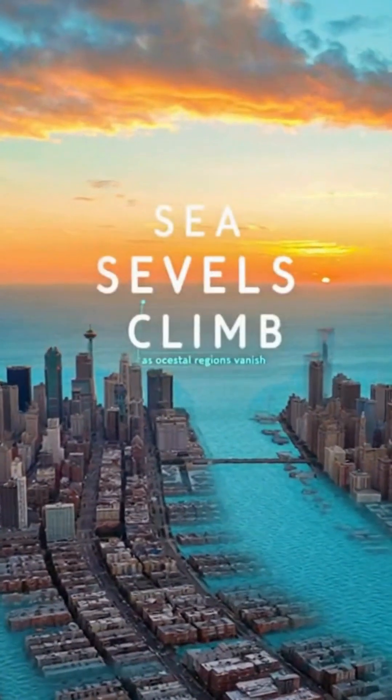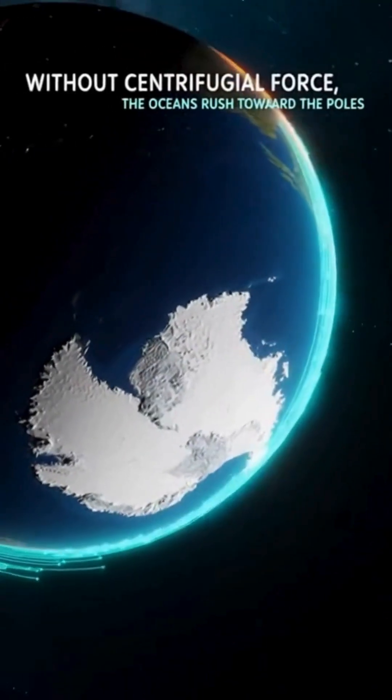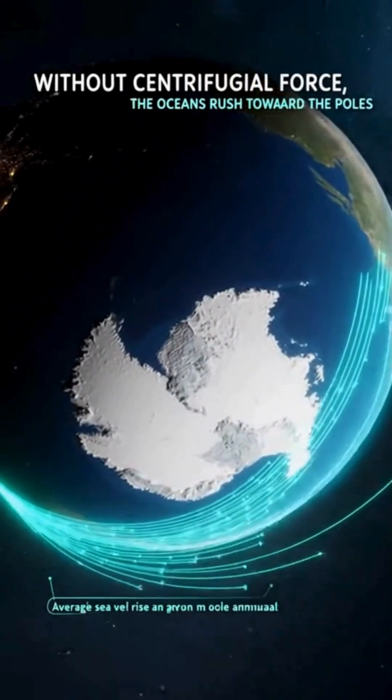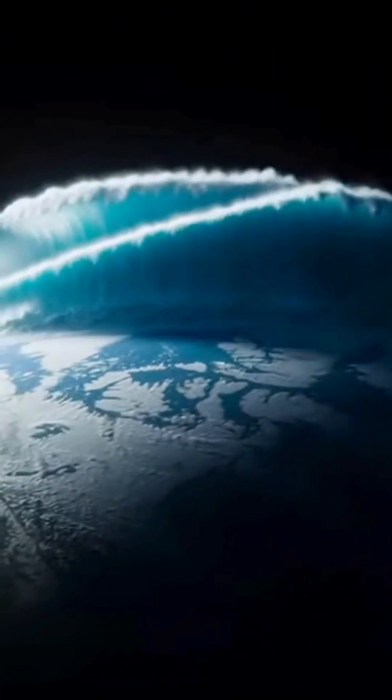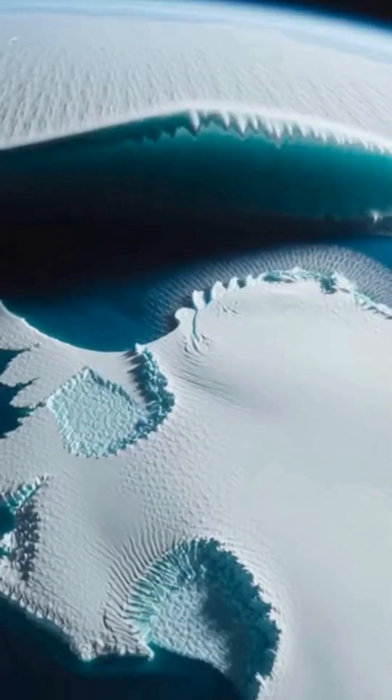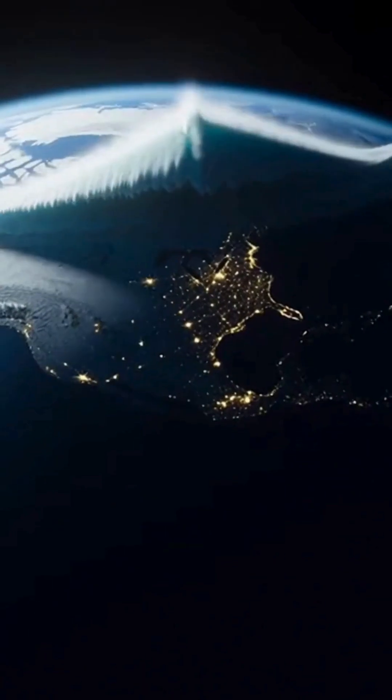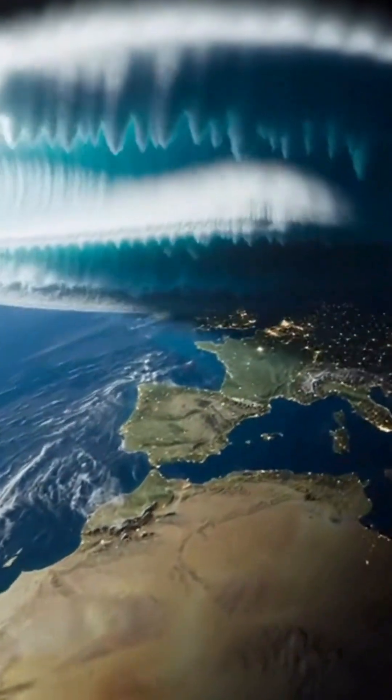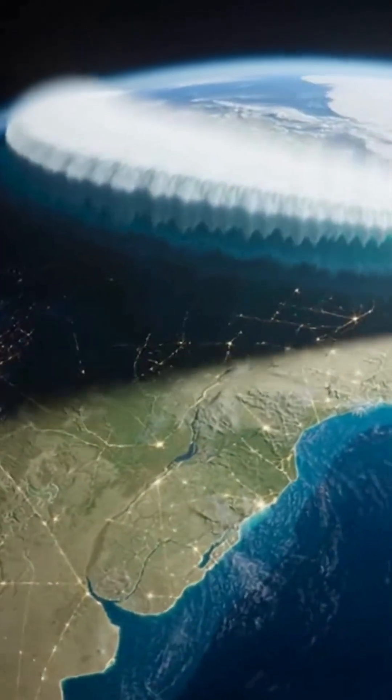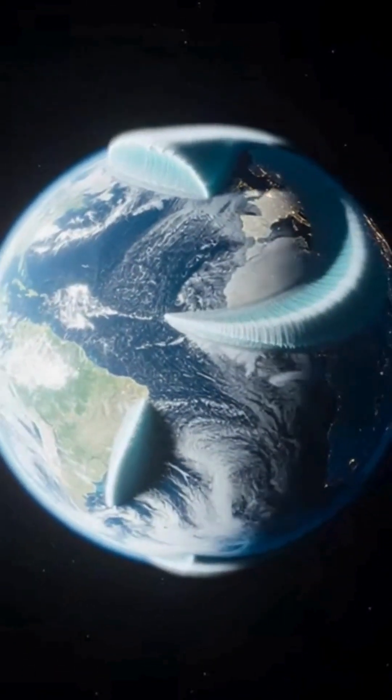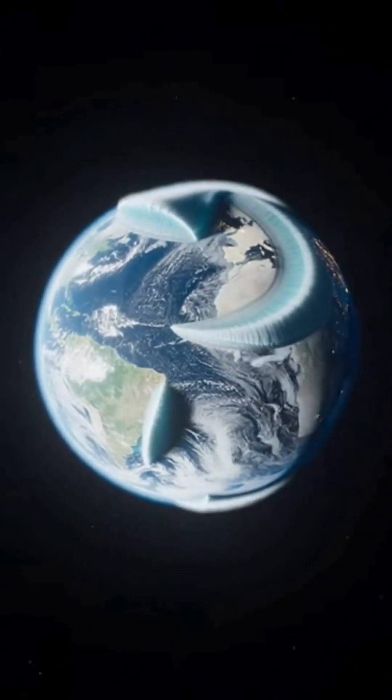As the first second passes, centrifugal force disappears and Earth loses its balance. The oceans, once bulging around the equator, surge violently toward the poles, creating megatsunamis kilometers high that sweep across continents, drown cities, and redraw the world's geography in moments.